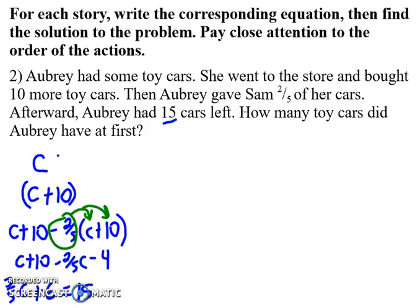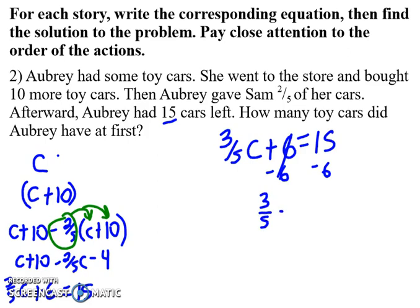Now if I go to solve that, I've got three-fifths C plus six equals 15. I'm going to subtract six from both sides. That gives me three-fifths C equals nine. And now I'm going to multiply by the reciprocal. So I'm going to multiply by five-thirds.